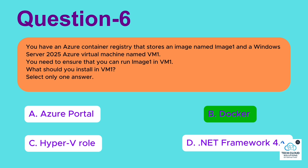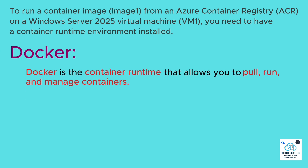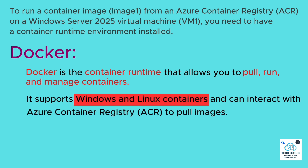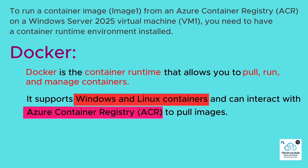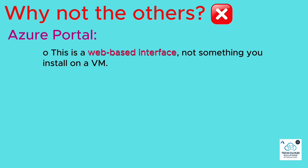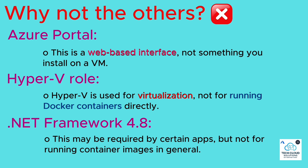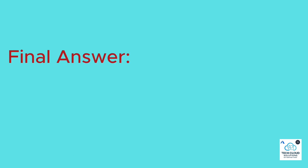Correct answer: Docker. To run a container image (Image1) from an Azure Container Registry (ACR) on a Windows Server 2025 Virtual Machine (VM1), you need a container runtime environment installed. Docker is the container runtime that allows you to pull, run, and manage containers. It supports Windows and Linux containers and can interact with Azure Container Registry to pull images. Why not the others? Azure Portal — this is a web-based interface, not something you install on a VM. Hyper-V role — used for virtualization, not for running Docker containers directly. .NET Framework 4.8 — may be required by certain apps, but not for running container images in general. Final answer: Docker.